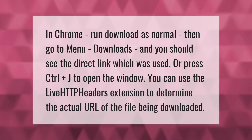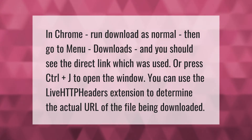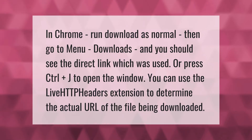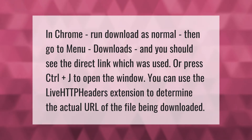In Chrome, run the download as normal, then go to Menu > Downloads and you should see the direct link which was used. Or press Ctrl+J to open the downloads window. You can also use the Live HTTP Headers extension to determine the actual URL of the file being downloaded.